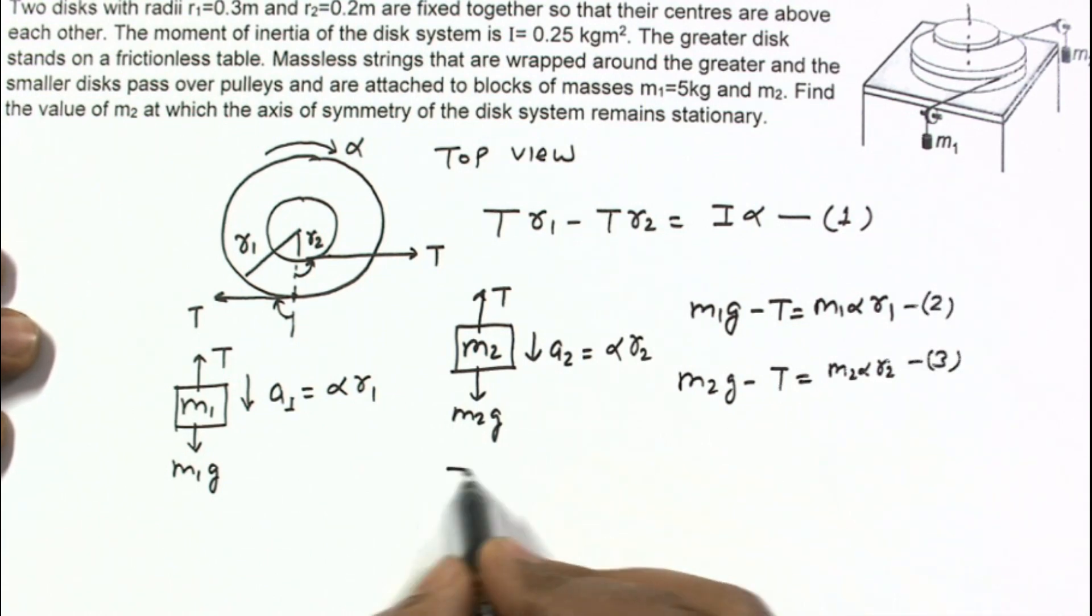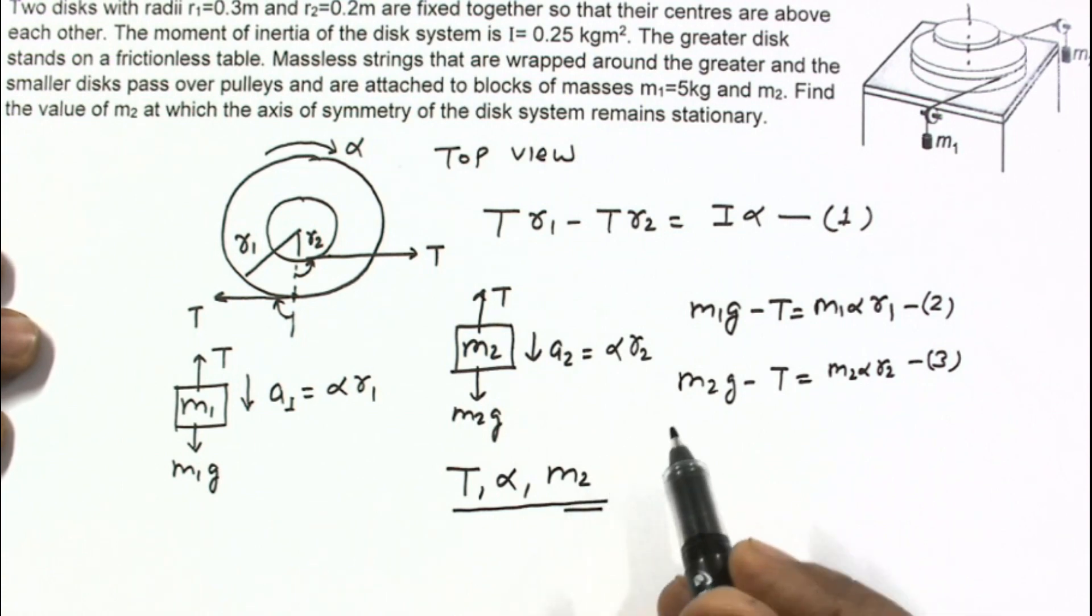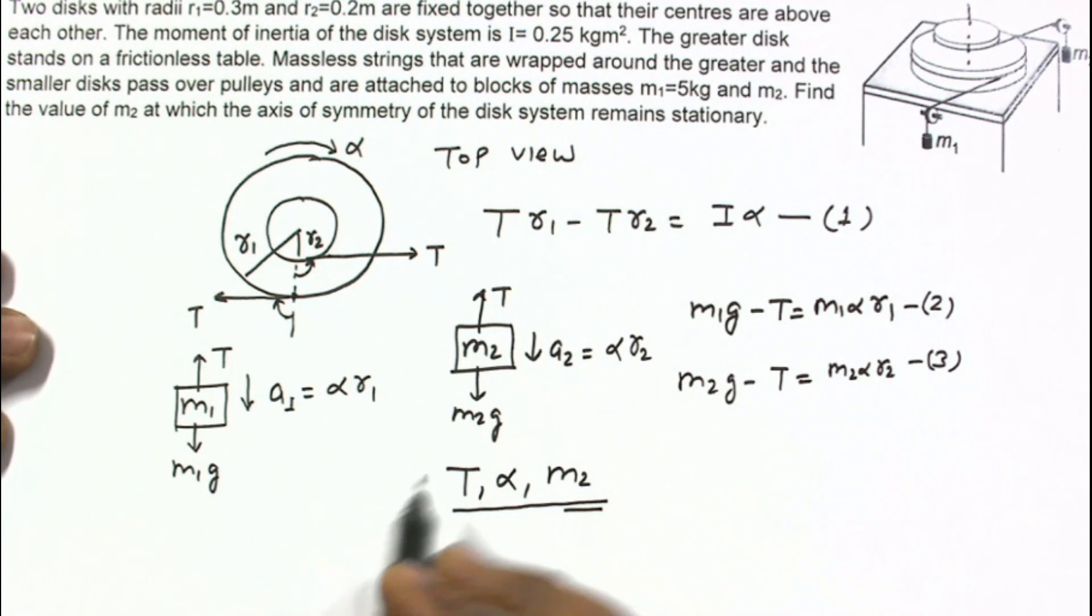Total variables we have: one variable is T, one variable is alpha, and one variable we have to calculate is M2, and we have three equations. So we can solve for three equations and we can find M2. The value of M2 from these equations will come out as M2 equals M1 times I divided by I plus M1 times R1 minus R2 squared.